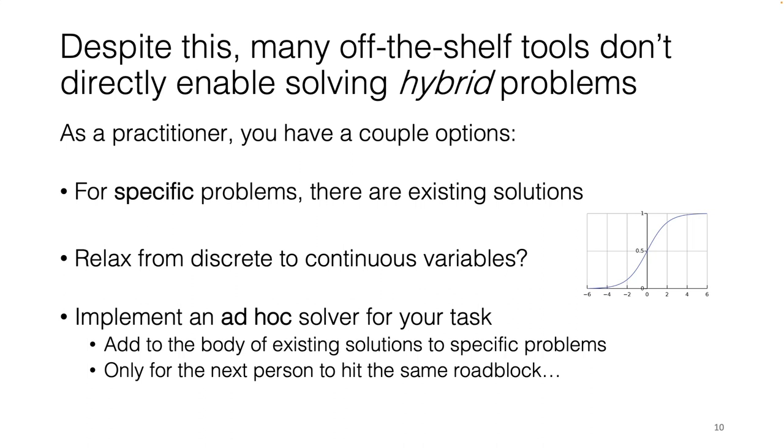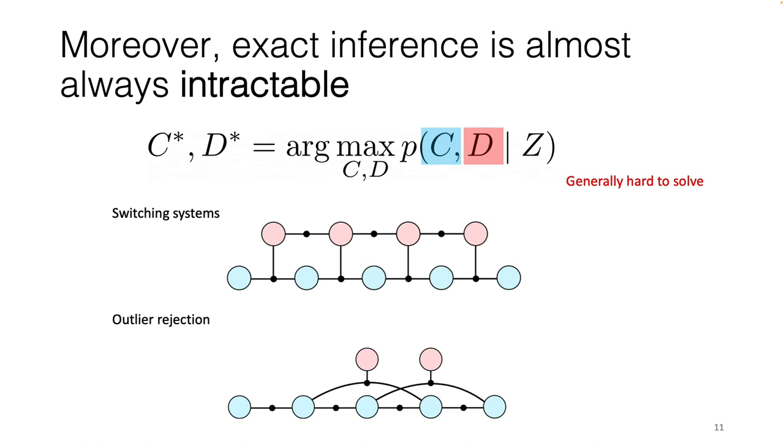Unfortunately, there's no off-the-shelf tool that is either as flexible or as easy to use as something like GTSAM for optimization problems defined in terms of hybrid factor graphs. And as a practitioner, you might be able to use an existing technique for a specific problem like outlier rejection, but otherwise you typically have to either relax from discrete to continuous variables or implement your own ad hoc solver.